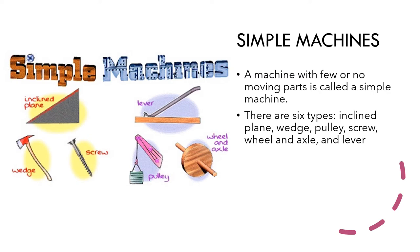There are six types: inclined plane, wedge, pulley, screw, wheel and axle, and the lever.